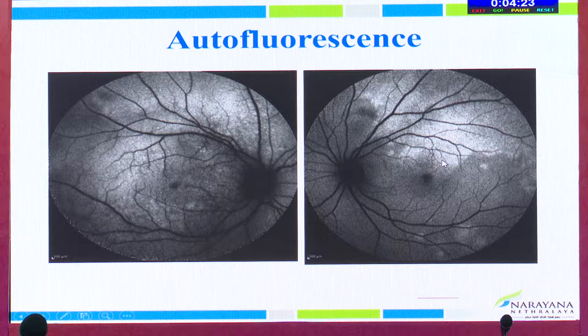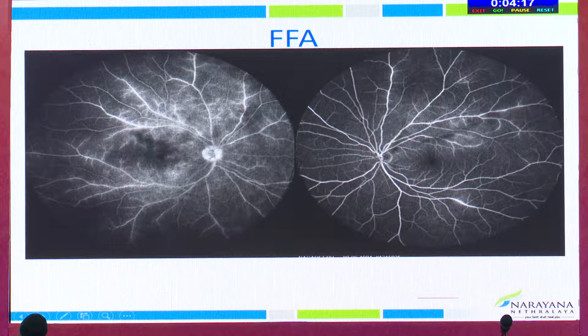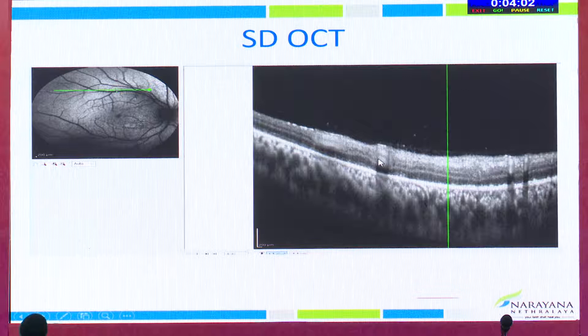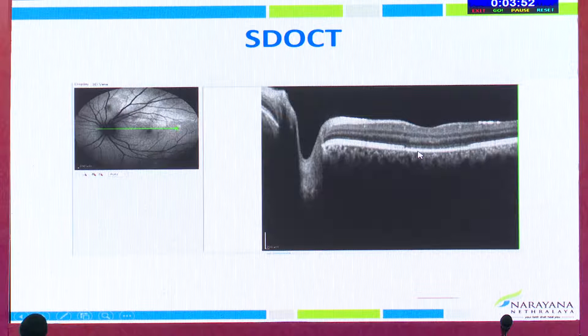FFA showed disc leak and diffuse perivascular leak with staining of the vessels in both eyes. OCT shows hyperreflective dots suggestive of posterior vitreous cells, disruption of the myoid ellipsoid zone and the external limiting membrane, which is responsible for the decreased vision. Also, not only the retina is involved, but there is increased choroidal thickness with hyperreflective dots in the inner aspect of the choroid, suggesting choroidal involvement as well. Based on the triangular pattern of retinitis, I did suspect syphilis as the differential diagnosis.